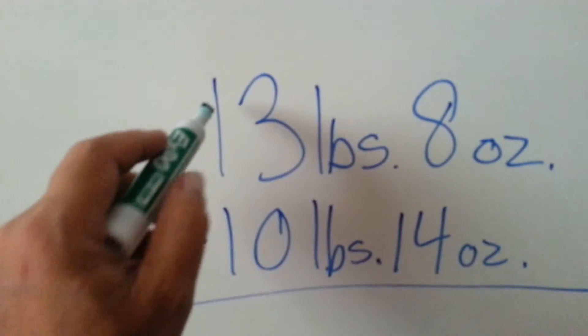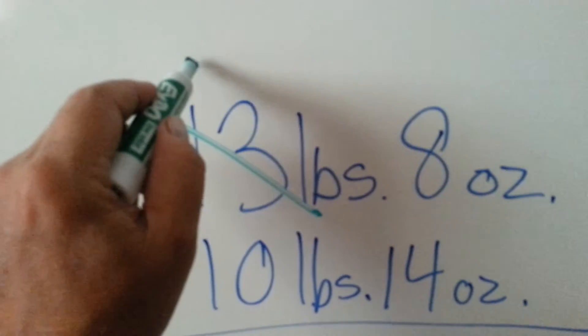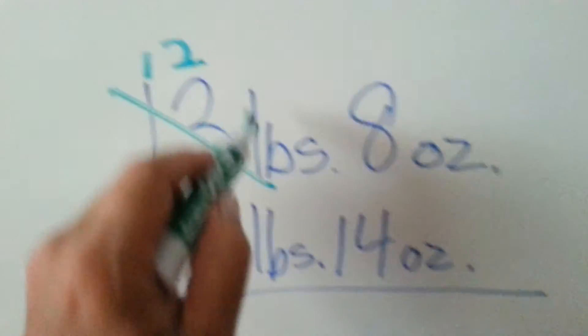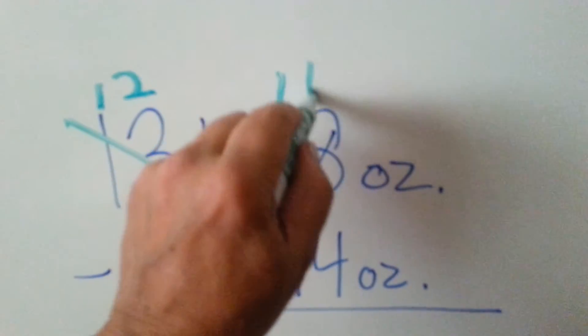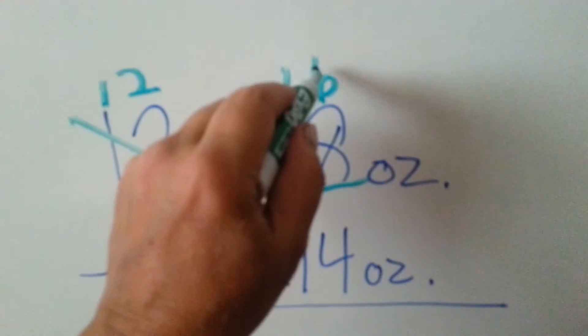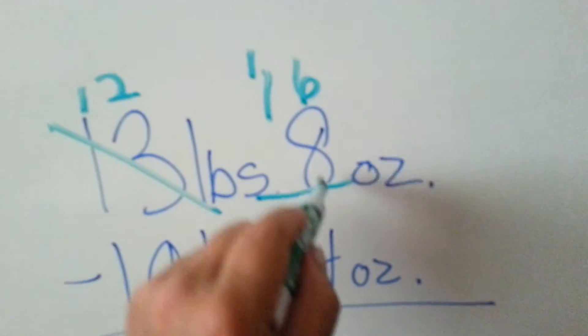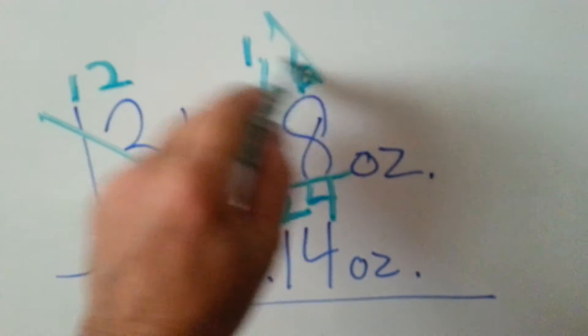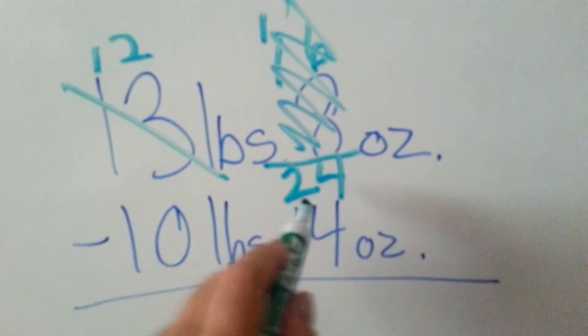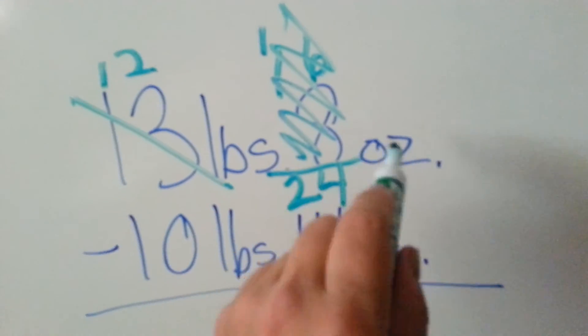We're going to have to borrow from this 13 pounds. It's going to become 12, and the 8 ounces, instead of just adding 1 like in regular borrowing, we're going to add 16 to it. 6 and 8 is 14, carry the 1, put the 4 down. 1 and 1 is 2. So now this goes away. Now we've got 12 pounds and 24 ounces.